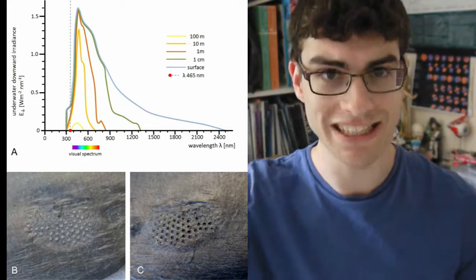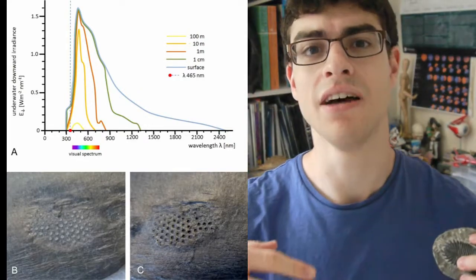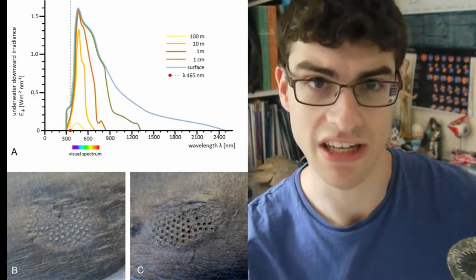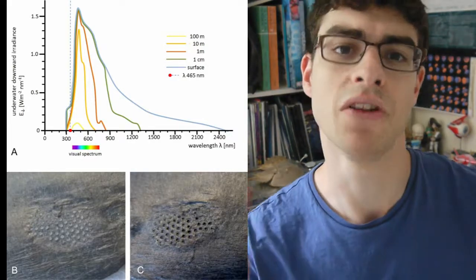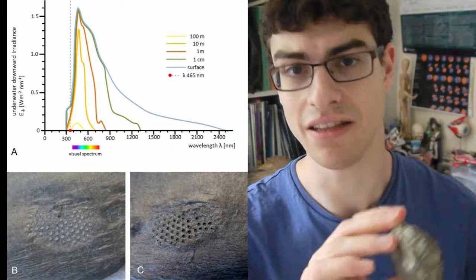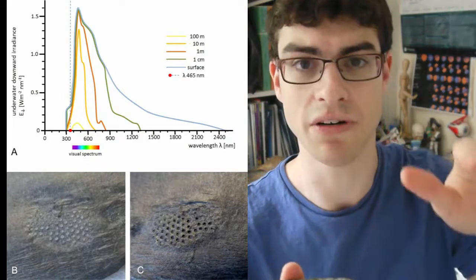Luckily, ultraviolet is attenuated by seawater so it doesn't penetrate as far as other light does. Trilobites lived deep down on the sea floor, where they'd eat detritus that had filtered down from above. There's an extra incentive for trilobites to have stayed down below because during that period of Earth's history the atmosphere was ozone-deficient, which means there would have been more ultraviolet penetrating down to the sea. Ultraviolet is bad for you because it damages your DNA and would have eventually killed anything that stayed too long.